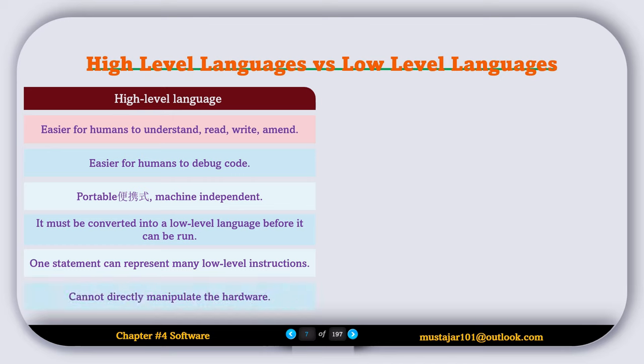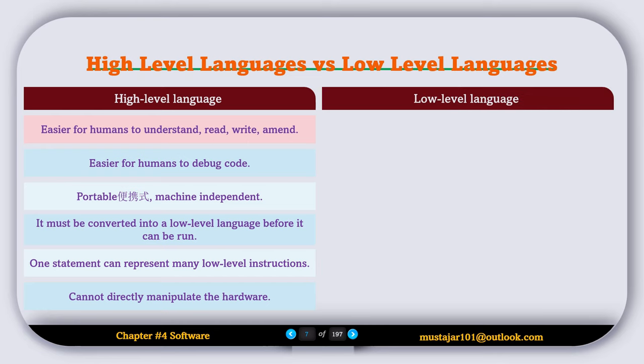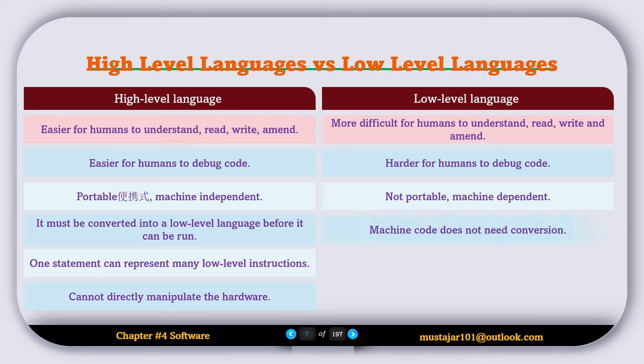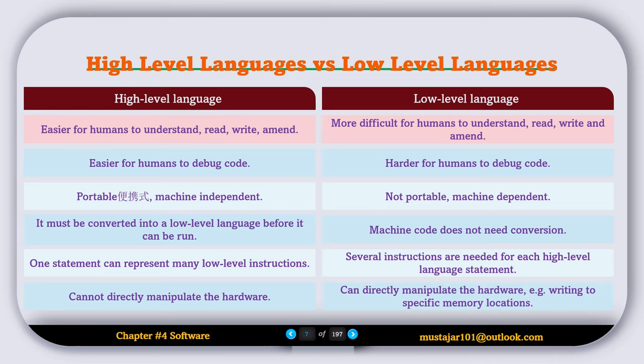And the last point is cannot directly manipulate the hardware. Now, let's see the low-level languages. More difficult for humans to understand, read, write, and amend. Harder for humans to debug code. Not portable, machine dependent. Machine code does not need conversion. Several instructions are needed for each high-level language statement. And the last one is can directly manipulate the hardware, for example, writing to a specific memory location.